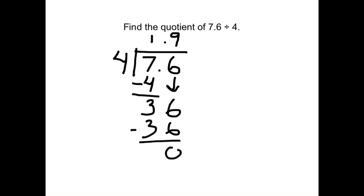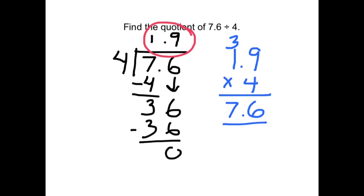The decimal comes straight up. So the quotient of 7 and 6 tenths divided by 4 is 1 and 9 tenths. And remember, you can always check your division with multiplication. So I multiply the answer times the 4, and we see I get 7 and 6 tenths back. It means my answer is correct.